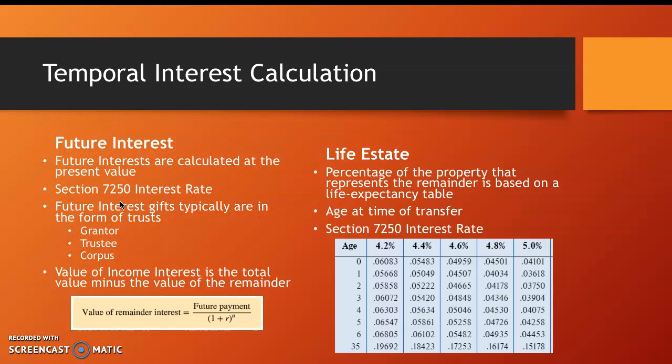The discount rate in this case, represented as R, is known as the Section 7520 interest rate published by the Treasury. The rate is currently at 0.6%, but you can find it on the IRS website. As you can see in this formula, the value of the income interest is the total value minus the value of the remainder. The value of the remainder is the future payment divided by 1 plus the Section 7520 interest rate to the nth degree, where n is the number of years.